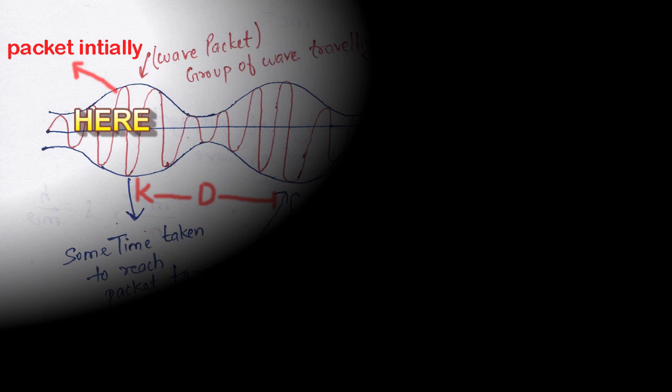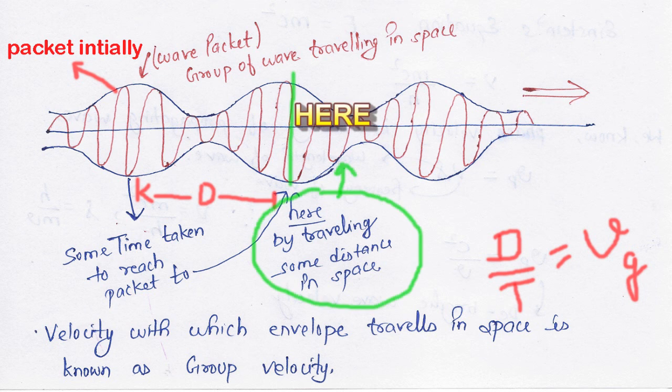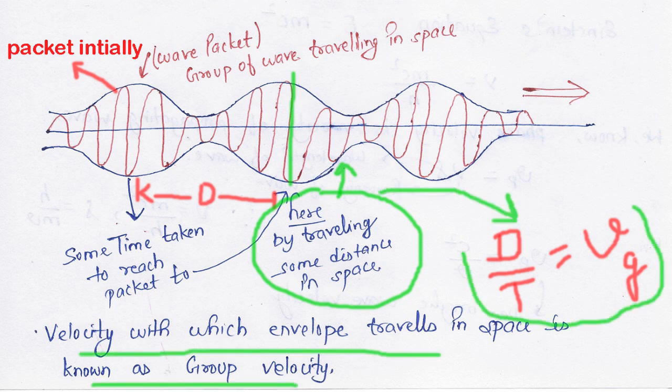If we look at the amplitude here, this amplitude is at this position at this time. After some time, this wave packet has moved to the right. It has moved from here to here, consuming some time and traveling some distance. The velocity of the wave packet is denoted by position divided by time.